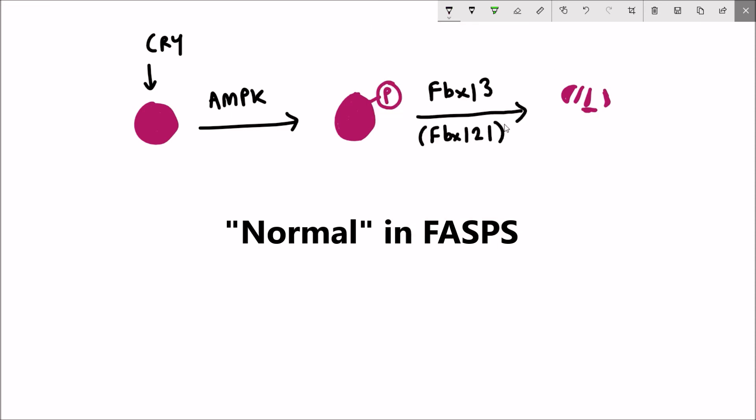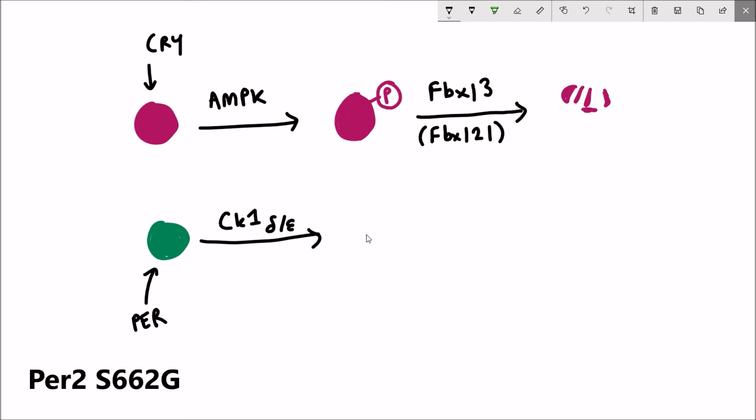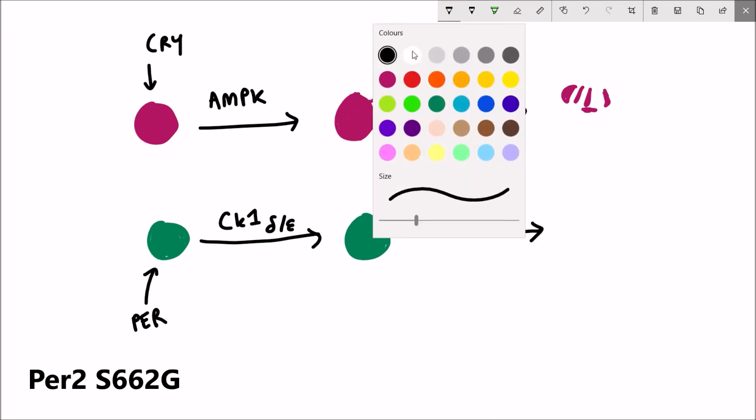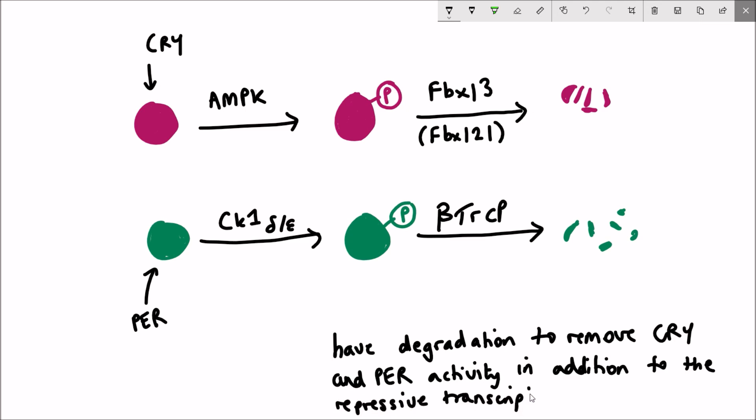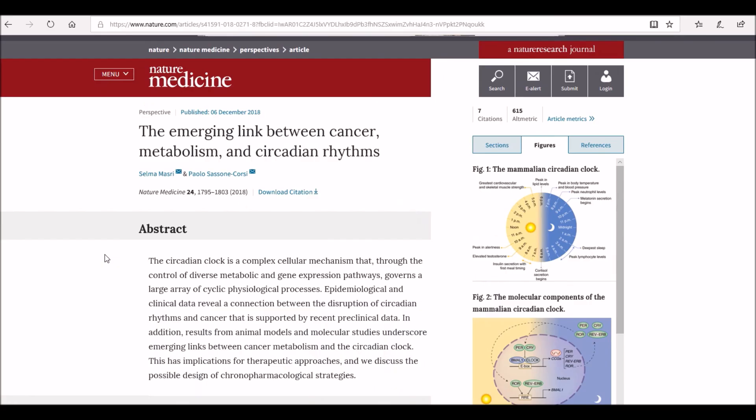By losing this phosphorylation site, the PER protein is degraded in a shorter time period, and this has the impact of advancing the circadian rhythm. Although the degradation of cryptochrome remains the same, the effect of the phosphorylation change on the period protein has the governing impact of advancing the rates of the circadian rhythm to around 22 hours.